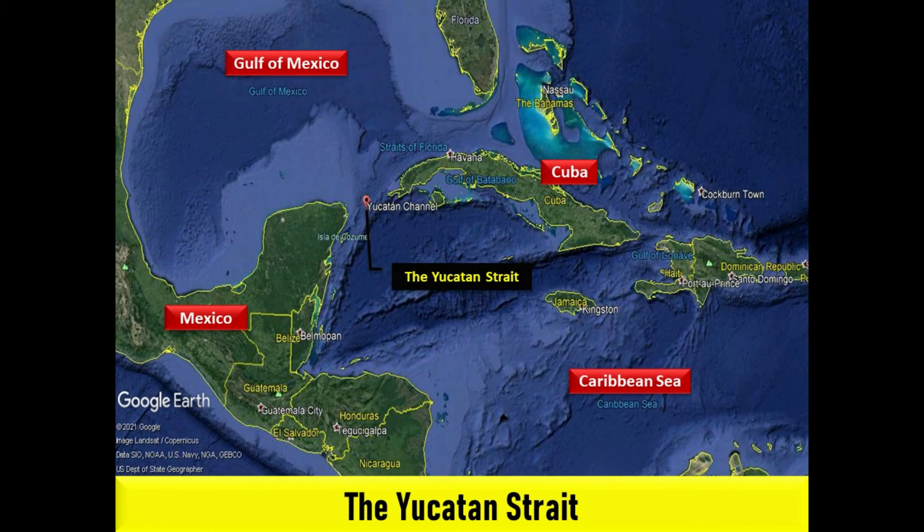The Yucatan Channel is a strait connecting the Gulf of Mexico and the Caribbean Sea, extending for 135 miles between Cape Catoche, Mexico, and Cape San Antonio, Cuba. The north and south equatorial currents enter the channel from the southeast and form the beginnings of the Gulf Stream in the Gulf of Mexico.